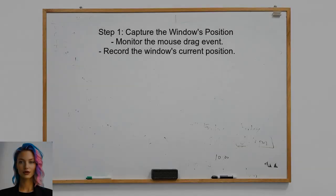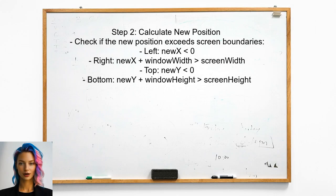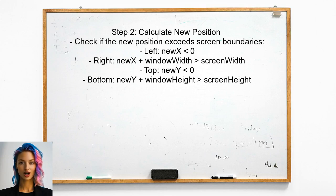To prevent windows from being dragged off the screen, the user can adjust the window's movement behavior in their application. First, they need to capture the window's position when it is being dragged. Next, the user should calculate the new position of the window during the drag event.